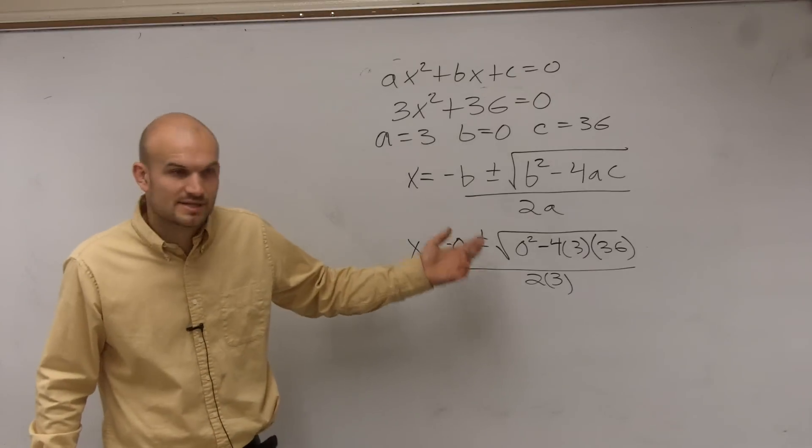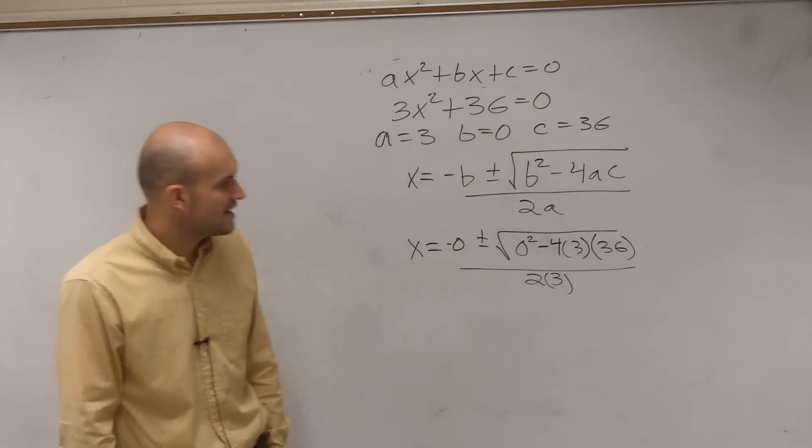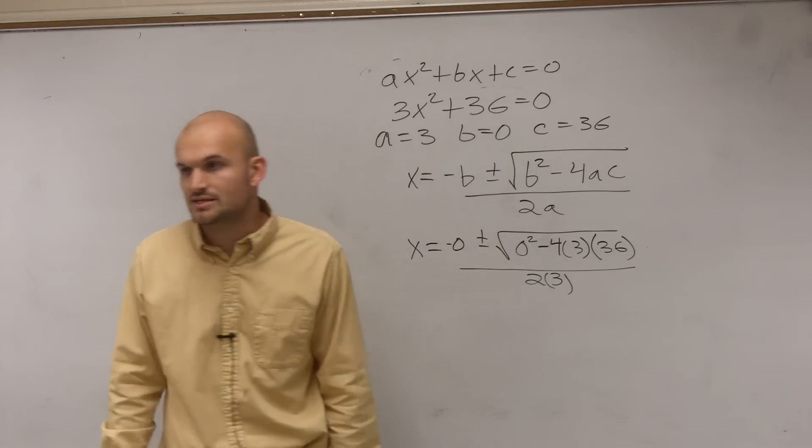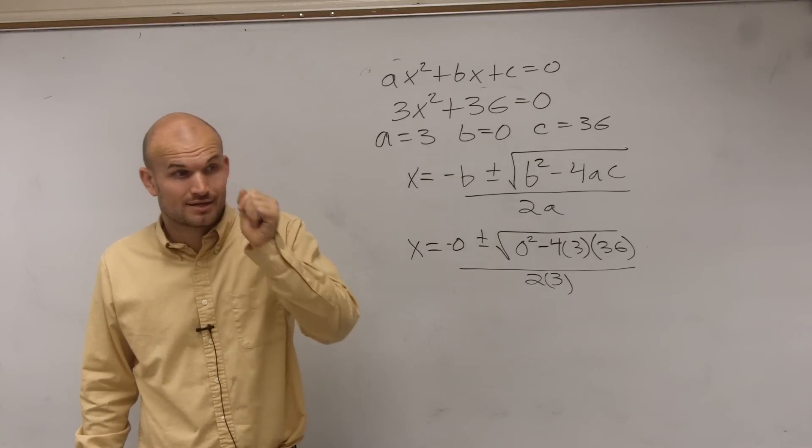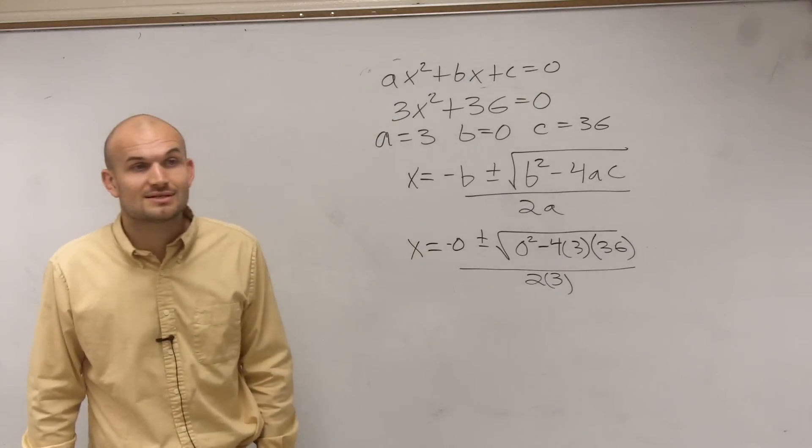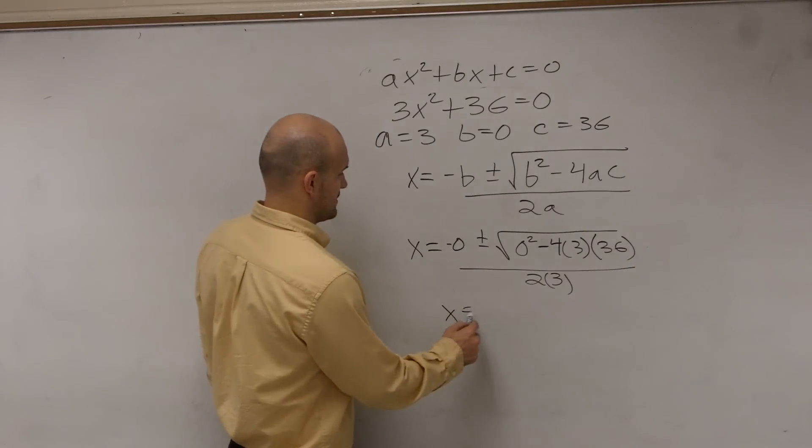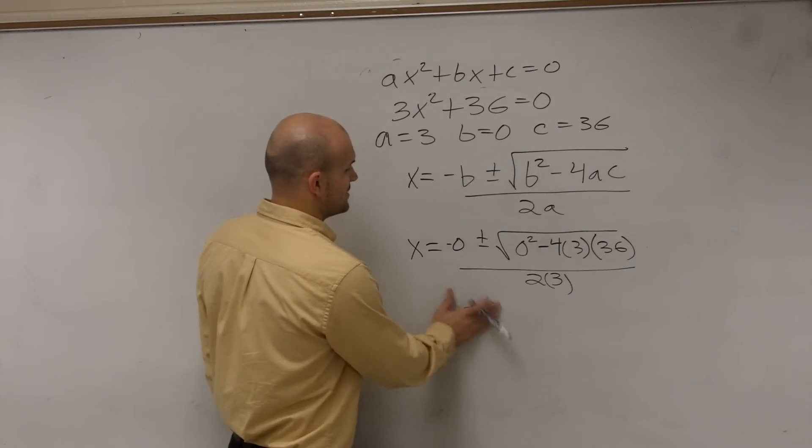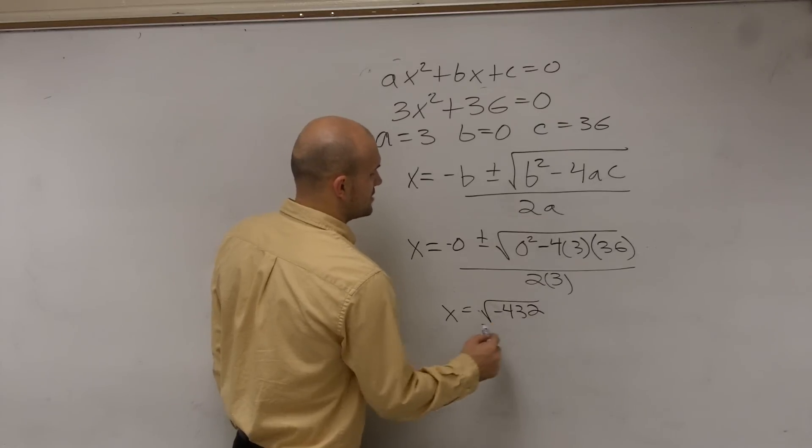Well, opposite of 0 is 0, so we don't need to write that anymore. Plus or minus 0 squared, and then I have negative 4 times 3 times 36, which is negative 432. So we have x equals the square root of negative 432 divided by 6.